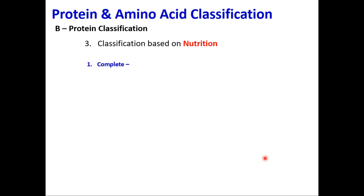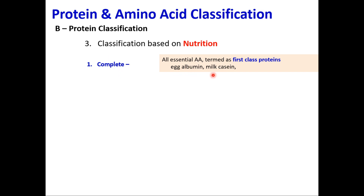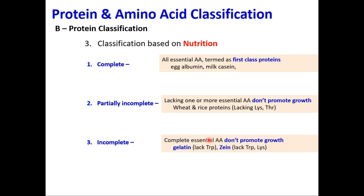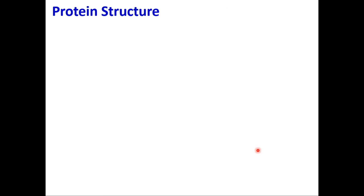Classification of proteins based on nutrition: number one, complete proteins (first-class proteins) — contain all essential amino acids, for example albumin and milk casein. Second, partially incomplete proteins — lacking one or more essential amino acids, particularly lysine or threonine; examples are wheat and rice proteins — they do not fully promote growth. Third, incomplete proteins — totally lacking essential amino acids, do not promote growth at all — for example gelatin, which lacks tryptophan, lysine.